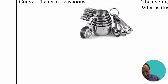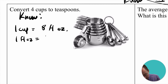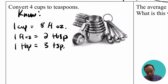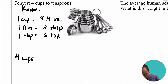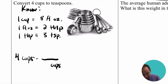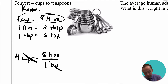Noting down the conversions: one cup equals 8 fluid ounces; one fluid ounce equals 2 tablespoons; one tablespoon equals 3 teaspoons. We start with 4 cups, then multiply by a conversion factor that cancels cups. Since cups is on top, we put cups on the bottom of the fraction. Using the conversion that 1 cup equals 8 fluid ounces, we write 8 fluid ounces on top and 1 cup on bottom, canceling the cups.